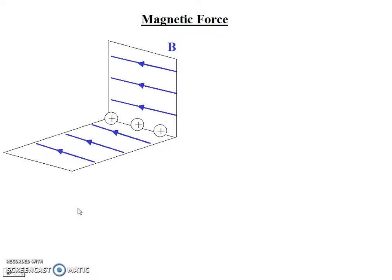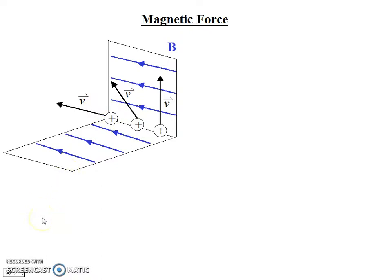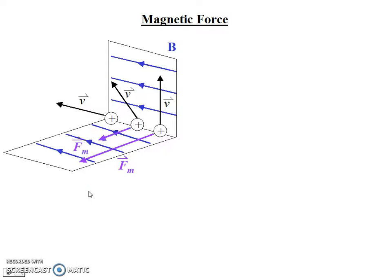Let's introduce into this space three point charges, all positive, all moving at the same speed but in different orientations. This one is moving straight up — to the top of the page. This one's moving to the top left of the screen. This one's moving directly to the left, in line with the magnetic field lines. As it turns out, this first point charge moving to the top of the screen will feel a magnetic force sort of out of the screen towards you — this is our magnetic force, capital F subscript M. This second charge feels a magnetic force also towards you, but it is diminished in size — much less than the first. And the third one actually feels no magnetic force at all.